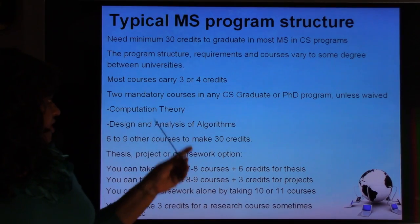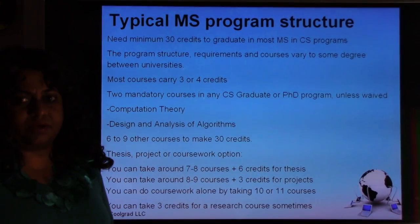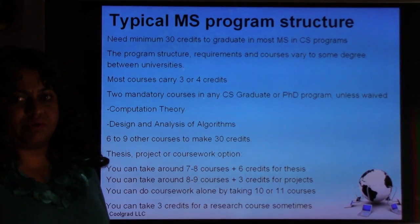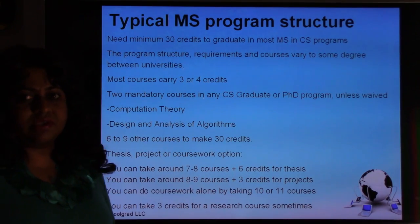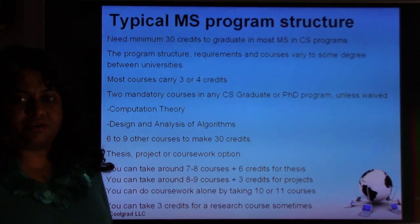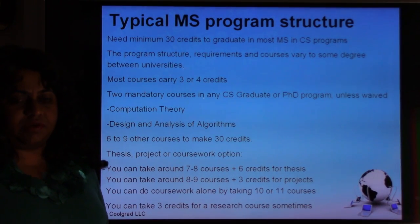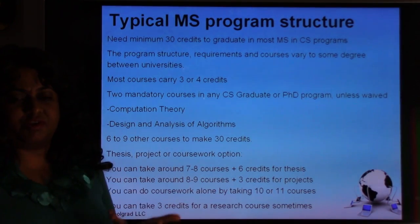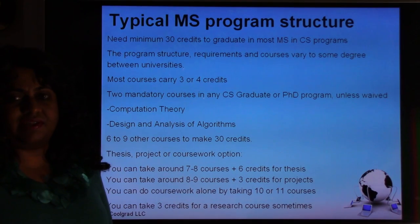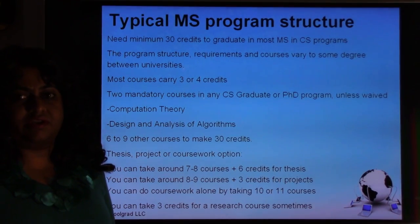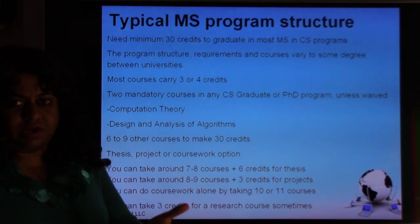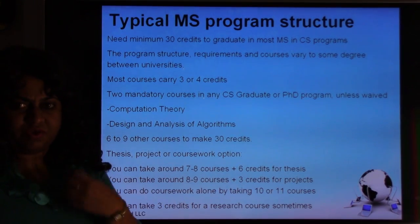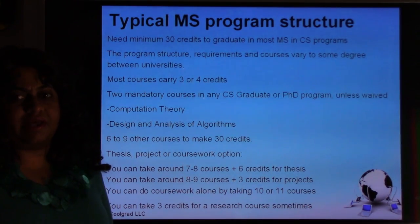For these two courses, either you have to take them at the graduate level or you can get a waiver if you've already done them at the undergraduate level. When I was doing my master's in Computer Science, I got a waiver for the algorithms course because I had already done it at the senior level in undergrad. If you're from India, your senior-level coursework might be very different from what's studied in Europe or the US, so you need to talk to the concerned professor about a waiver.